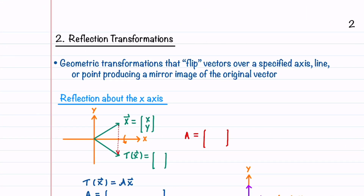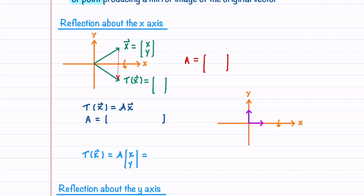The first set of transformations that we'll look at are reflection transformations. These are geometric transformations that flip vectors over a specified axis, line, or point, producing a mirror image of the original vector. We'll first find the standard matrix that reflects vectors about the x-axis. We're going to reflect vector x over the x-axis and get vector T of x, which is equal to (x, -y). To find the matrix A, let's remind ourselves that A is equal to T of E1 and T of E2.